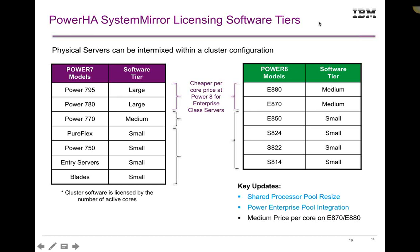Licensing-wise — as soon as we moved up to Power 8, we got rid of the large tier. On the E870 and E880s, it's only the medium tier now, which is nice as far as pricing goes. With enterprise-class boxes we have full integration with Power Enterprise Pools, and now we also give you the ability to manipulate the shared processor pool size. If you don't have enough space in that shared processor pool and there's additional resource available, you can have it expanded on failover.